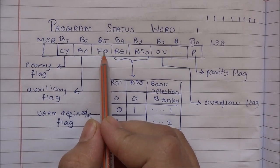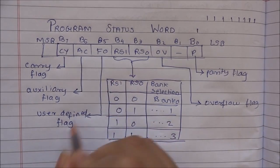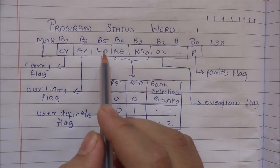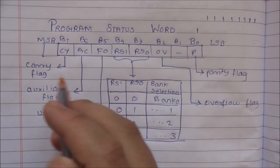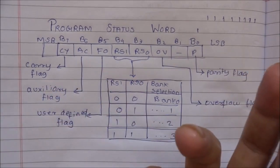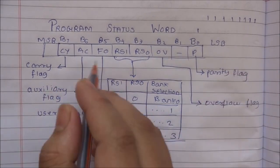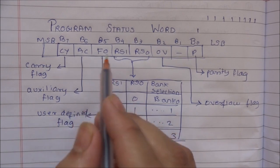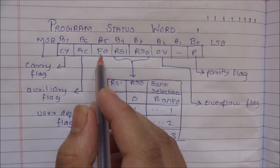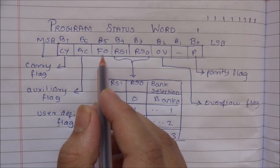The F0 flag is the user-defined flag. This flag is totally under the control of the programmer — the user has the rights to set or clear this flag.